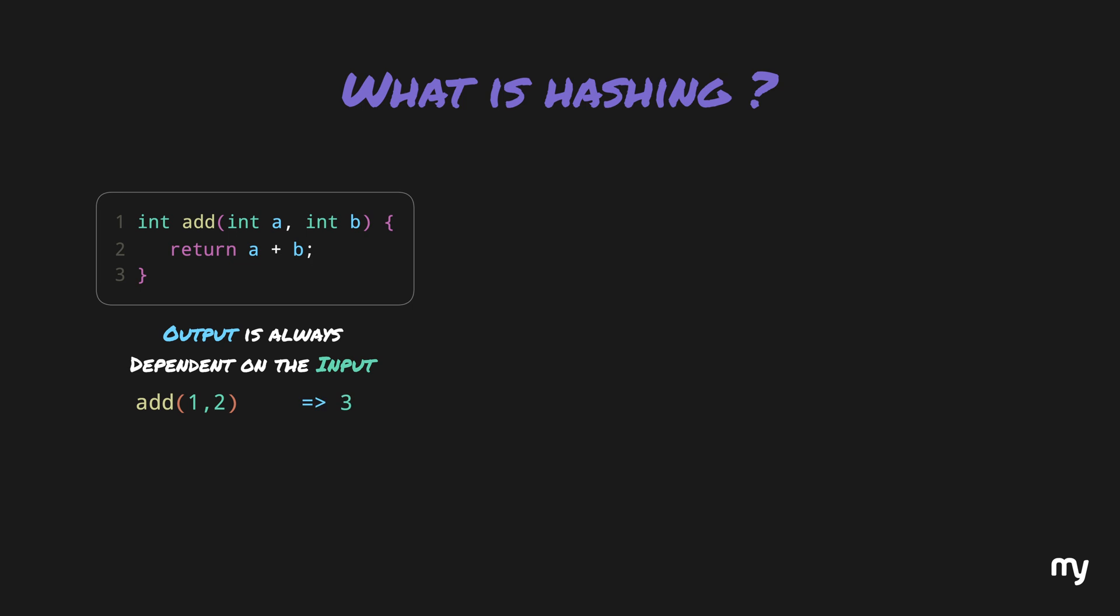If we send 1 and 2, the output is 3. And if we send 200 and 300, the output is 500. Now, a hash function is a special kind of function, in which we have to abide by three rules.